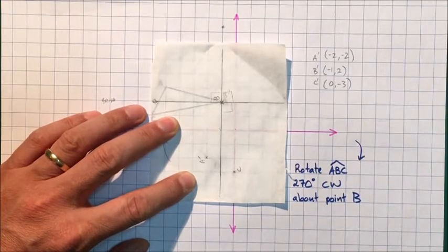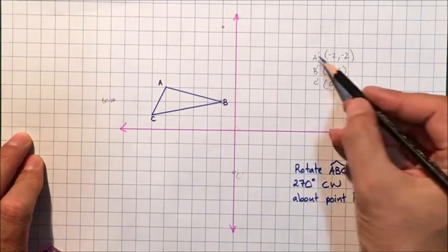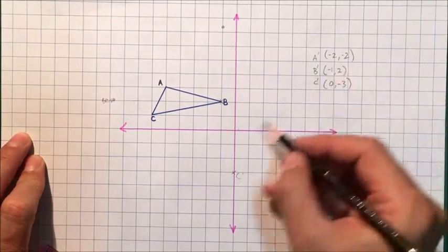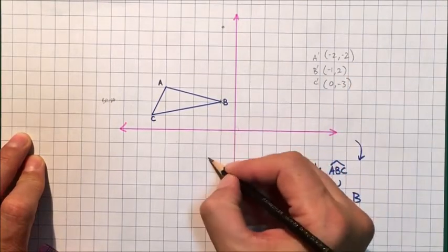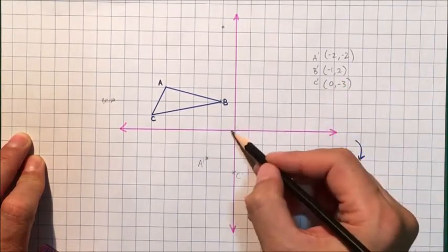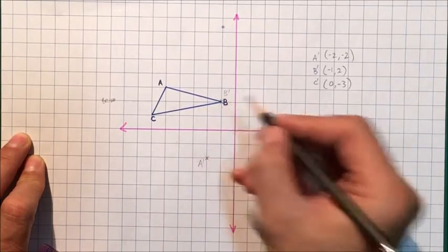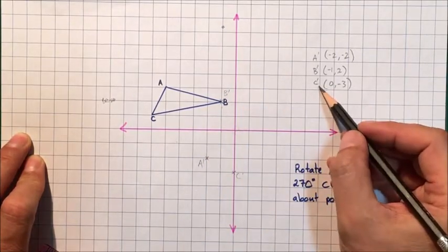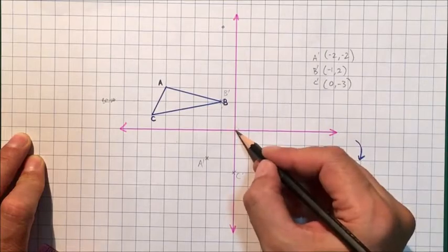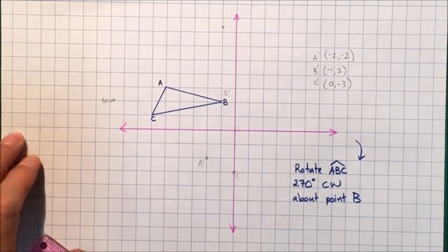A is (-2, -2), so one, two, one, two—this is going to be where A' is. B is (-1, 2), minus one, one, two—yep, so that's going to be B' as well as point B. And C' is (0, -3), zero, one, two, three—C'. Okay, all I have to do now is draw the image of triangle ABC. Just take my time.